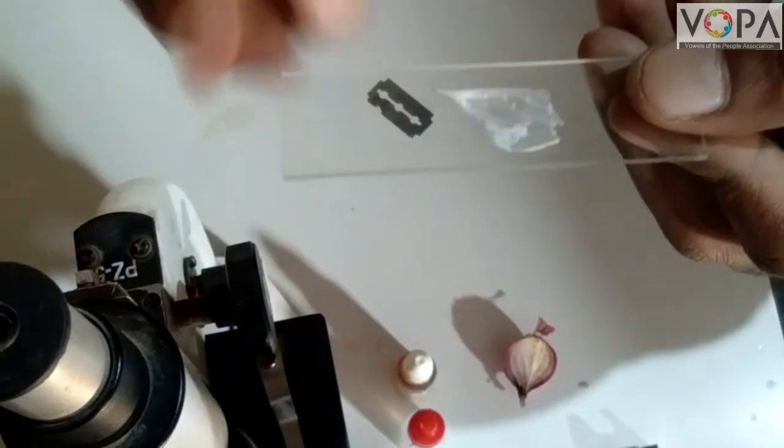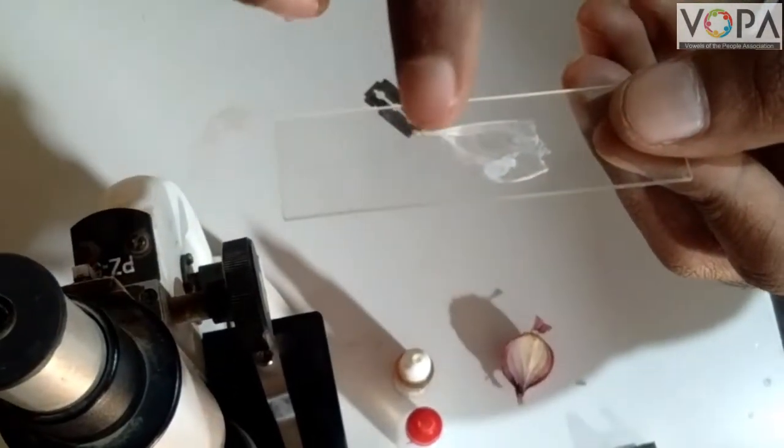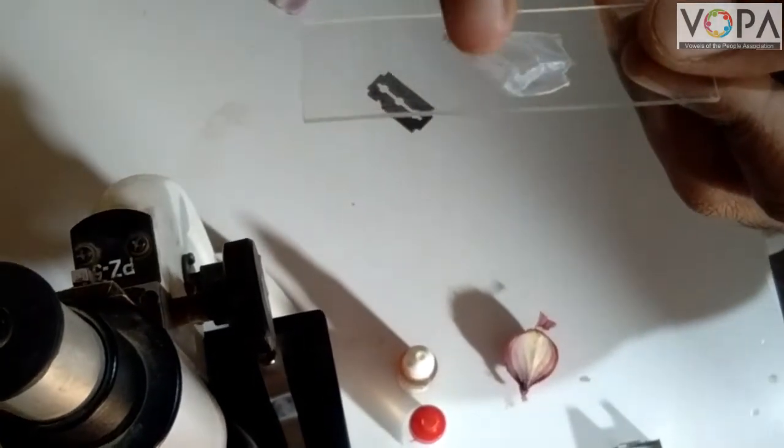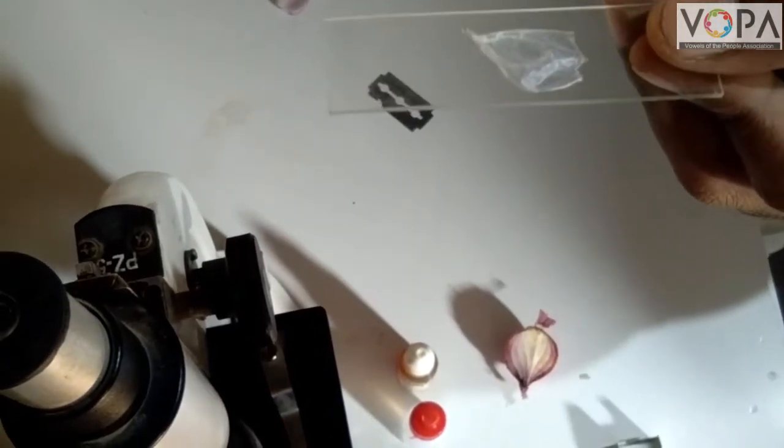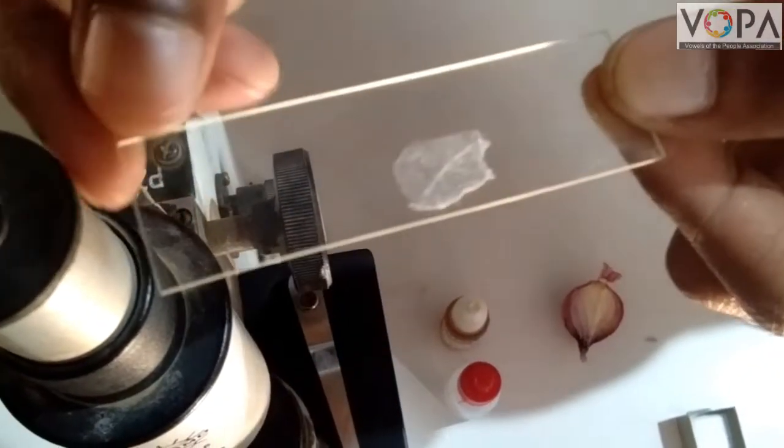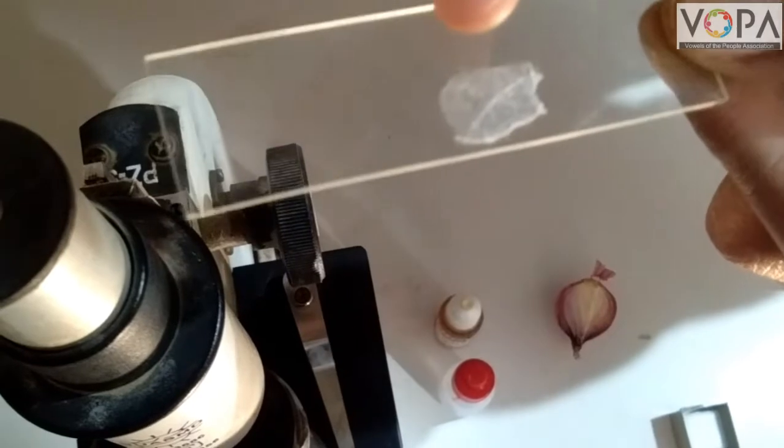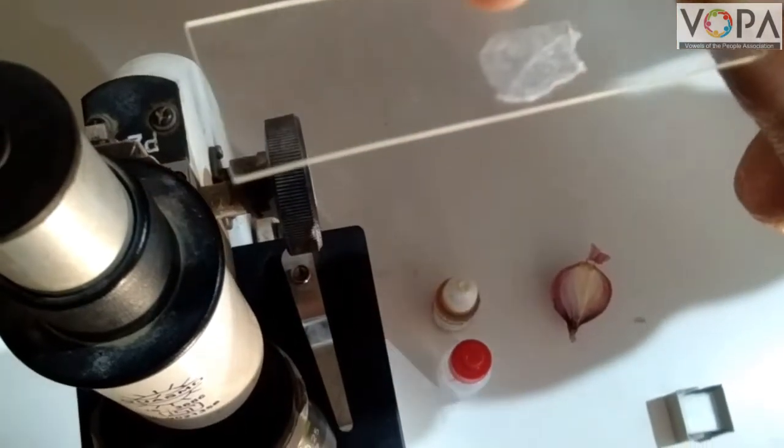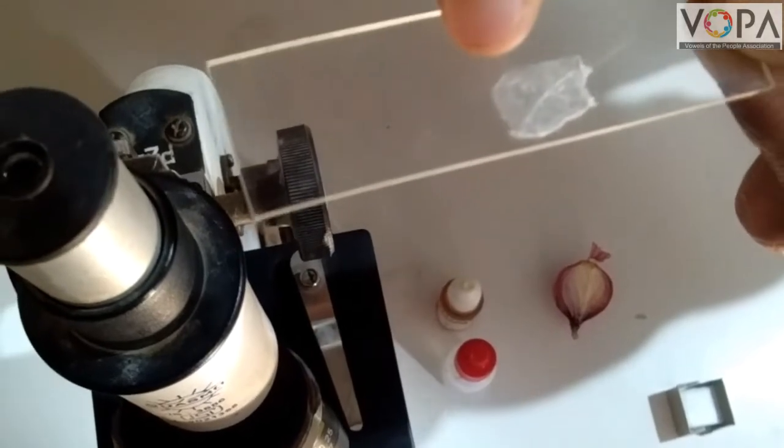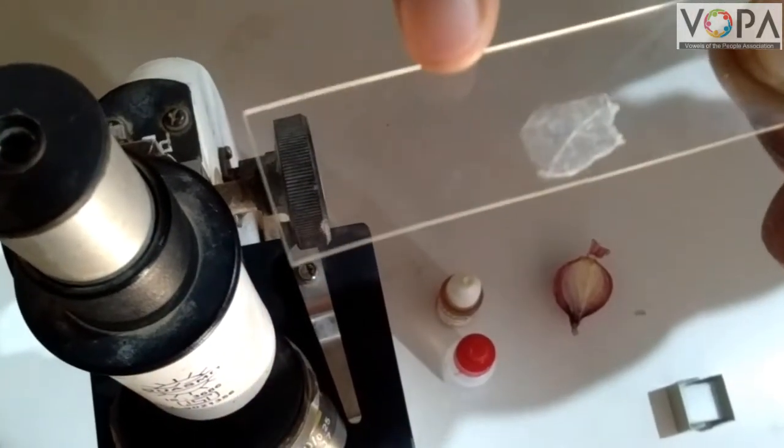Place this thin piece of skin on the glass slide. In this way, we have to spread this thin skin of the piece of segment of onion on a glass slide.